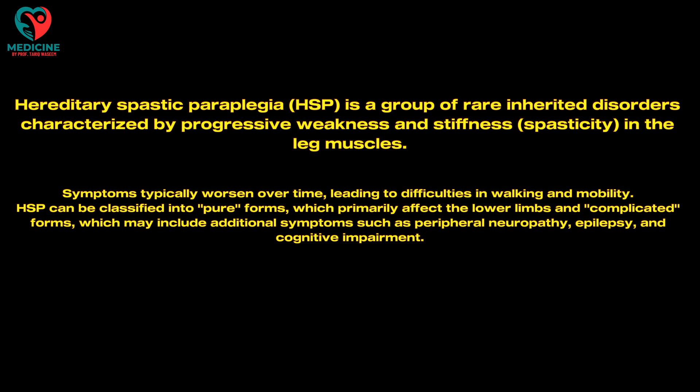HSP can be classified into pure forms, which primarily affect the lower limbs, and complicated forms, which may include additional symptoms such as peripheral neuropathy, epilepsy, and cognitive impairment.